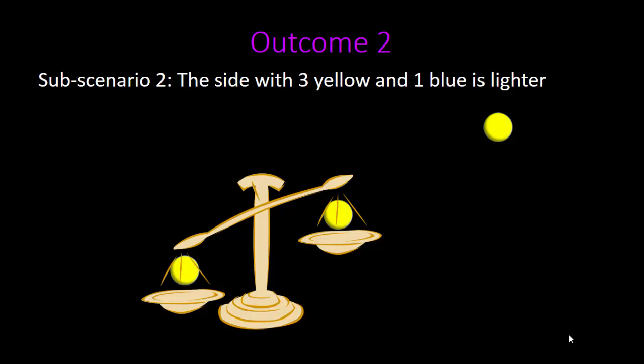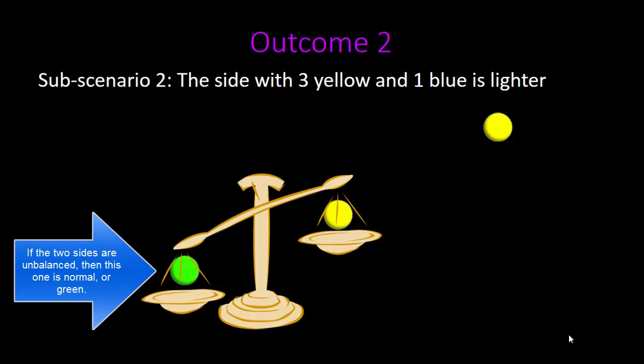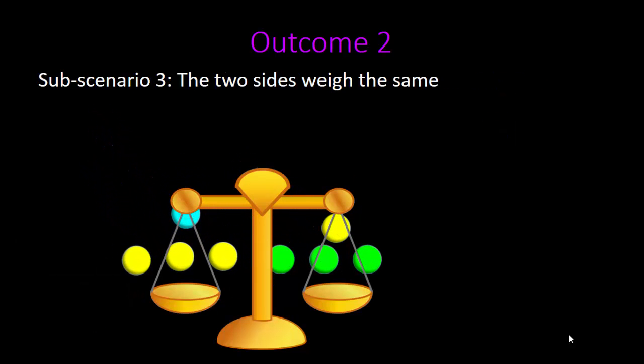If they are not the same weight, then the lighter of the two is the culprit. If they do weigh the same, then the culprit is the remaining yellow marble that we did not weigh.